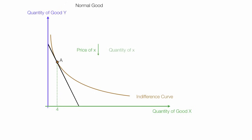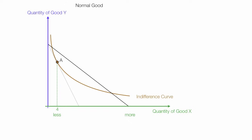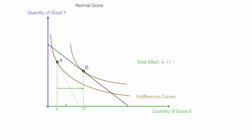Now, I'm going to have a price decrease of good X, so the quantity of good X is going to go up. The budget line rotates outwards, so the consumer can actually buy more of good X. I'm going to draw in a second indifference curve, so the consumer will move to point B and consume 17 units of good X at that point. And this distance there is the total effect — 17 units minus 4 units, for a total effect of 13 units.